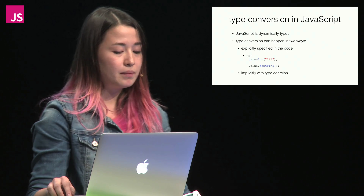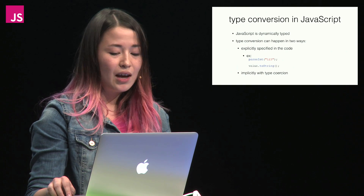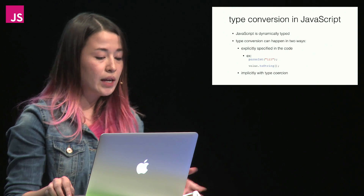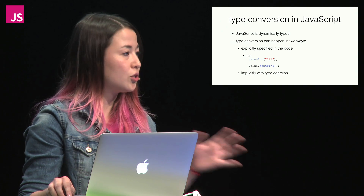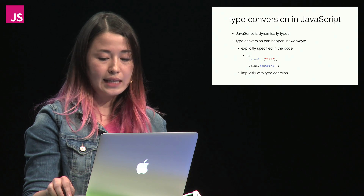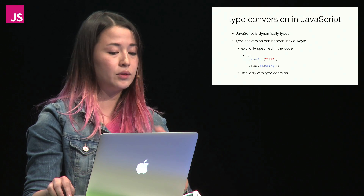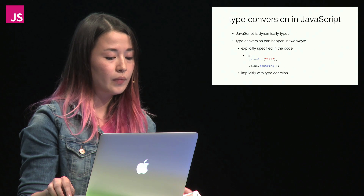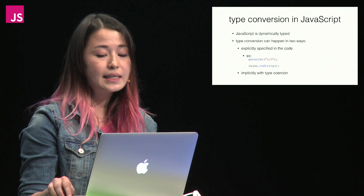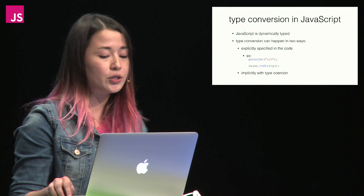So how does JavaScript handle type conversion? JavaScript is dynamically typed, as many of you know, which means that variable types are determined during script execution at runtime. Type conversion can happen in two ways. It can be explicitly specified by the developer, like calling parseInt, which converts a string to an integer, or toString. Or it can be implicitly performed by JavaScript during script execution. This kind of type conversion is typically referred to as type coercion, and that's what we're focusing on today.